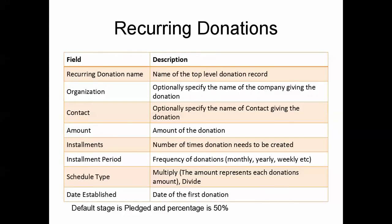Some important fields in a recurring donation are: the name — you can add the keyword 'recurring' to easily identify it; optionally, an organization name for the company making the donation; the contact — the person giving the donation; the amount; and the number of installments and the installment period.